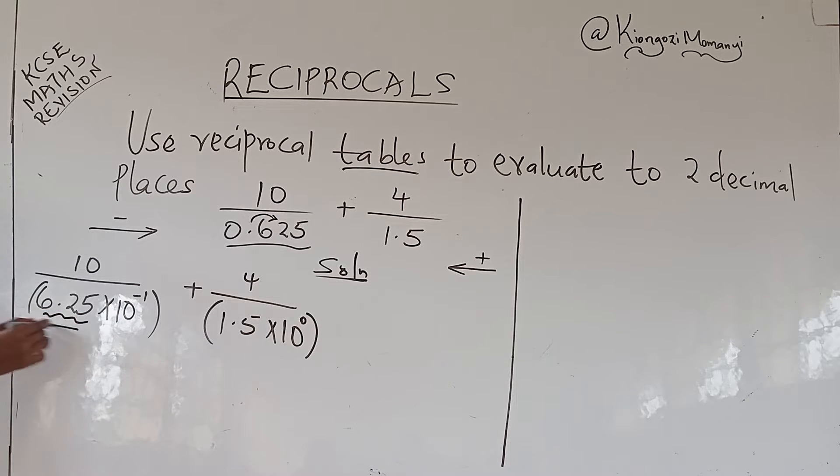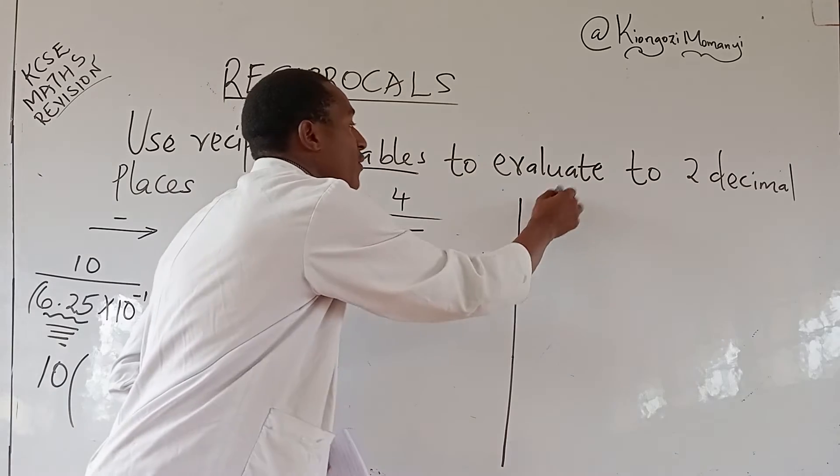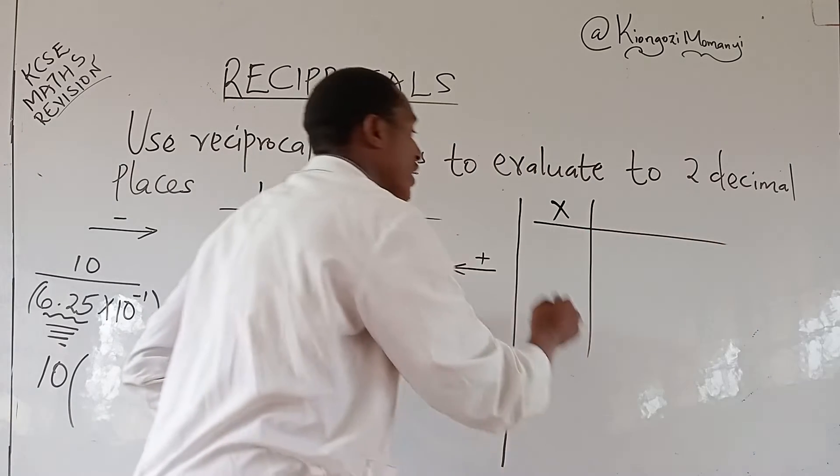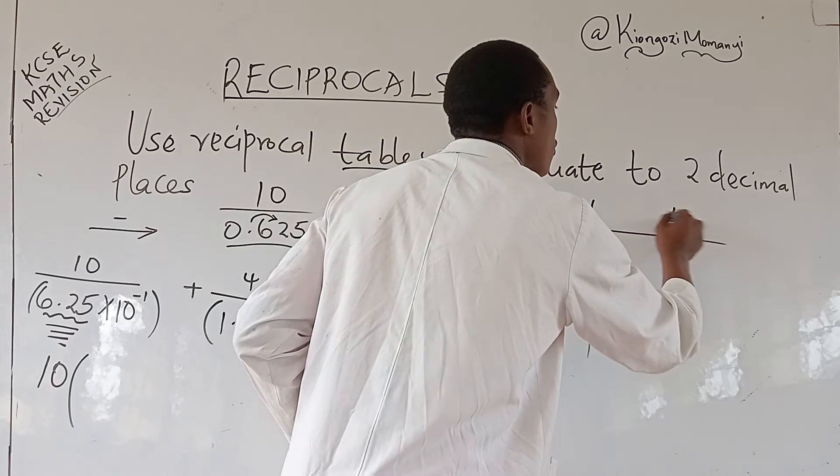6.25 is left from the table. So we shall have 10 into brackets. I want to read from my table here, the table of reciprocals. And then on the x value, I am looking for 6.2. And then at the middle, I will look for 5.